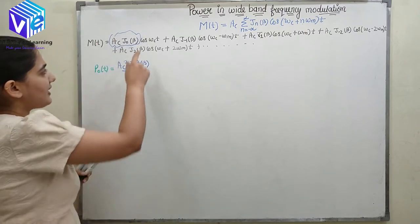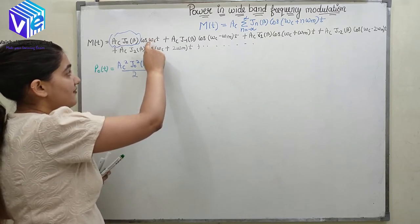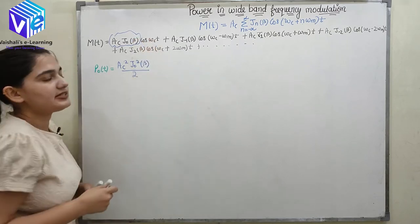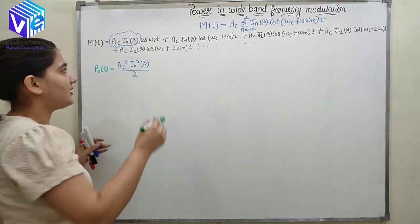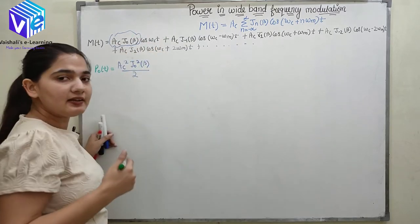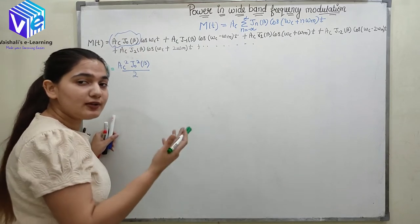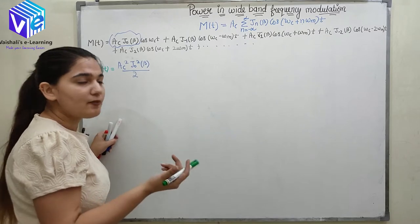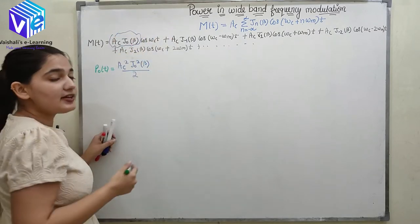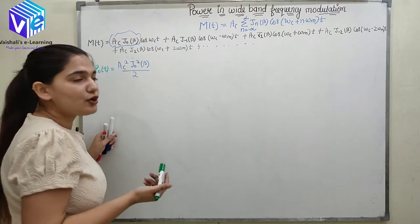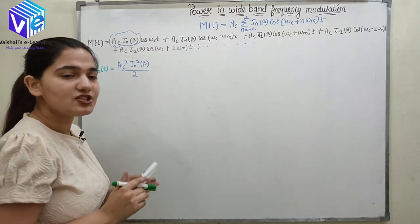This carrier component does not contain any information — at this frequency we have just the carrier frequency, so the message content is not there. This is the power of the carrier in the modulated signal. This term gives me the power of the carrier in the modulated signal because it does not contain any message information.